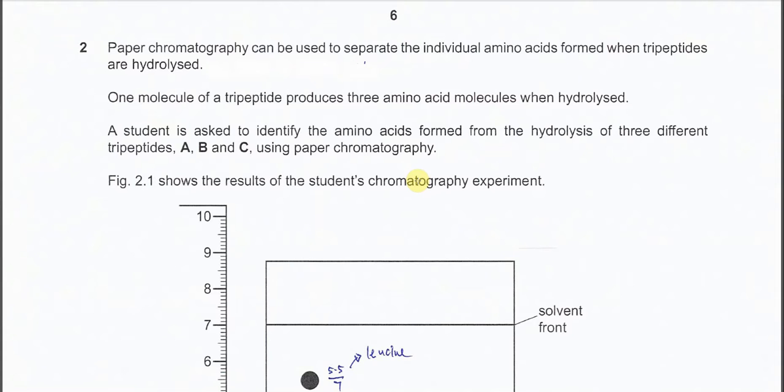Question 2. This question is about paper chromatography and is used to separate the amino acids from the hydrolysis of tripeptides. So means inside tripeptides it should consist of three amino acids. It can be same, it can be different.